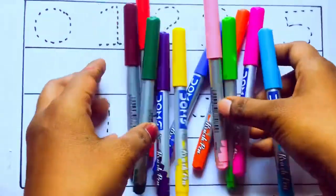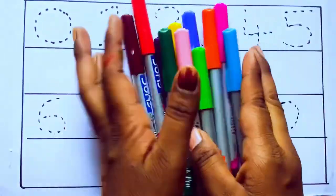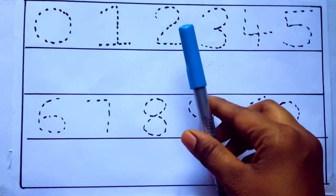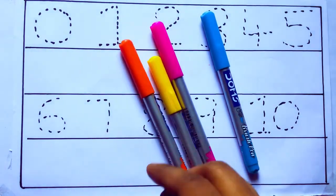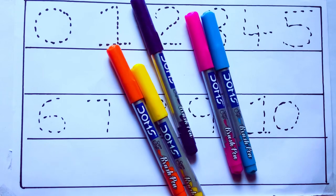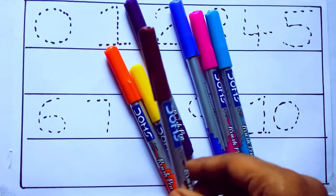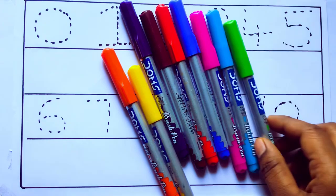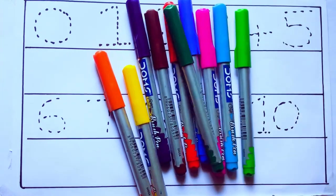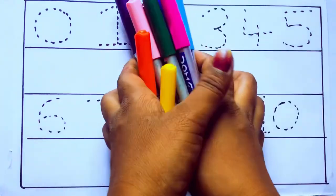Let's learn some colors. These are all the color pencils. Let's learn the names. Sky blue color, pink color, yellow color, orange color, violet color, blue color, brown color, red color, green color, and pink color.